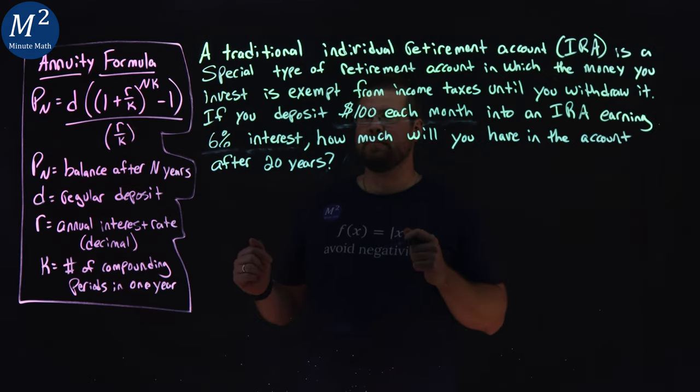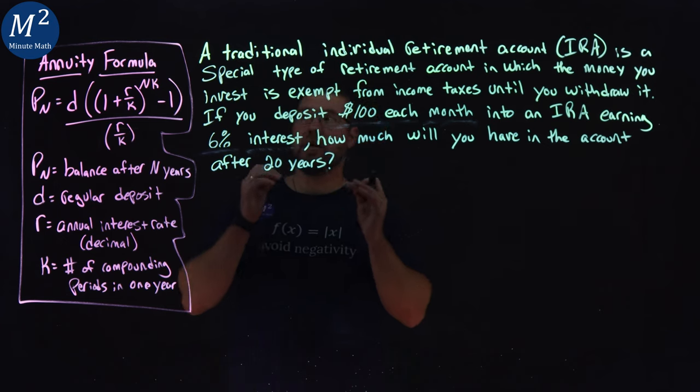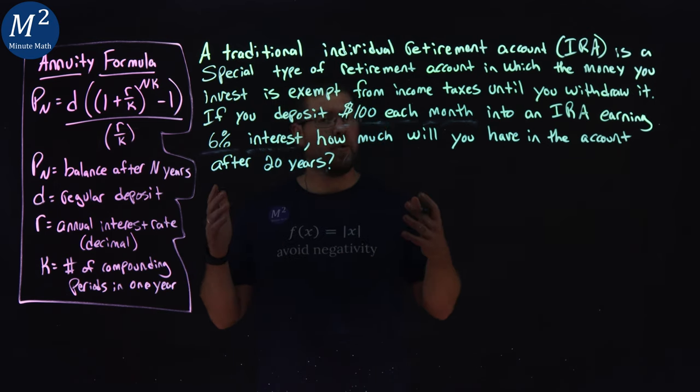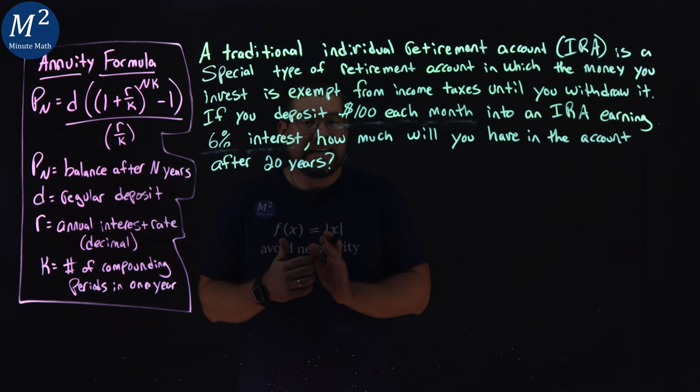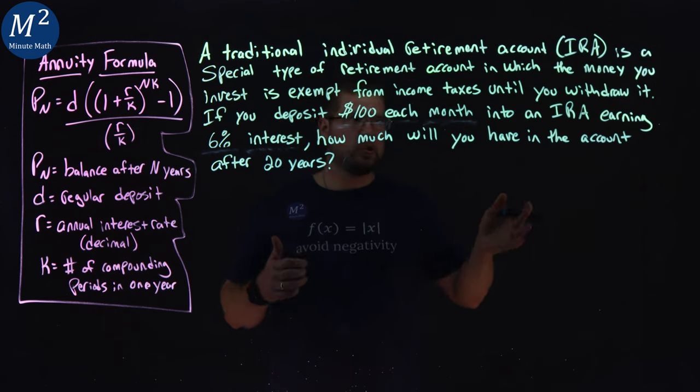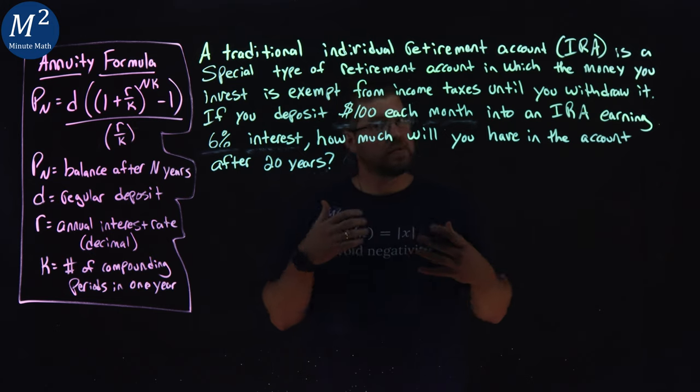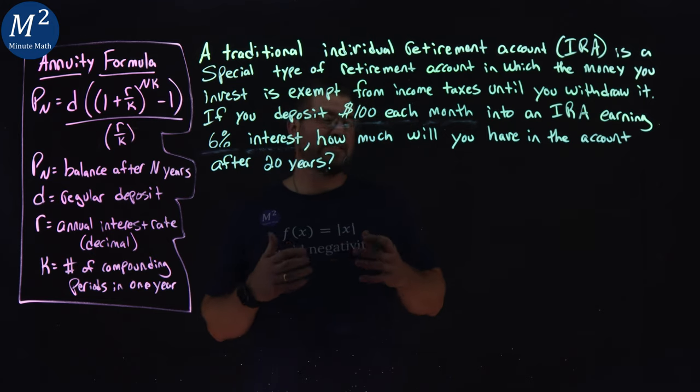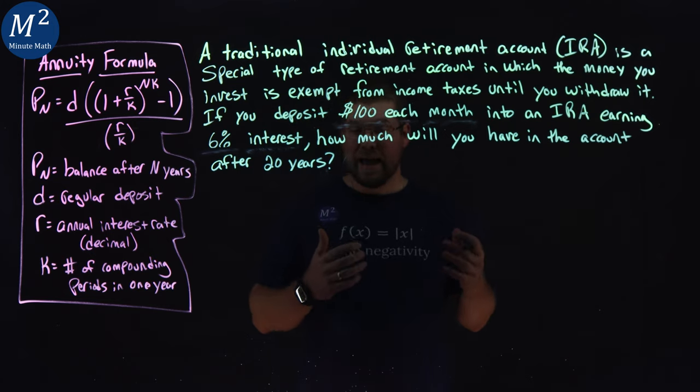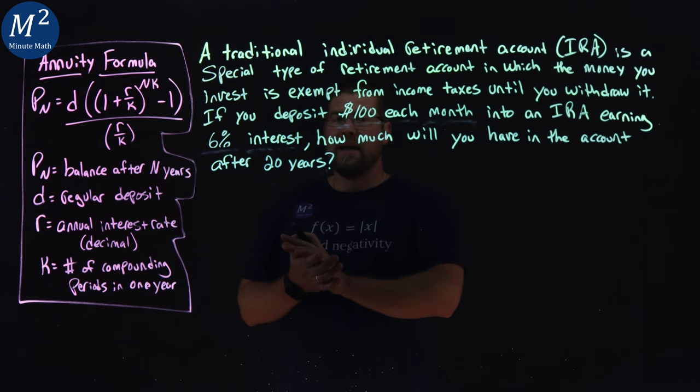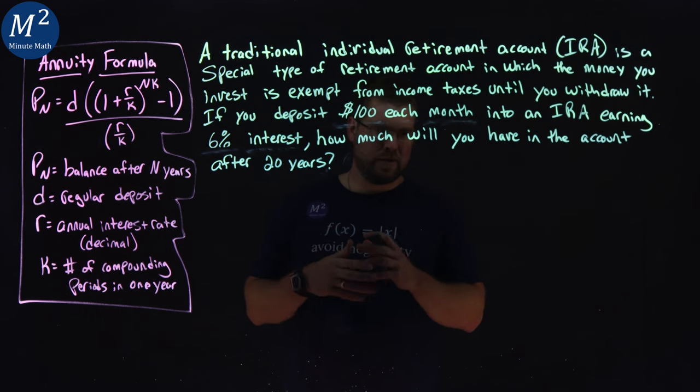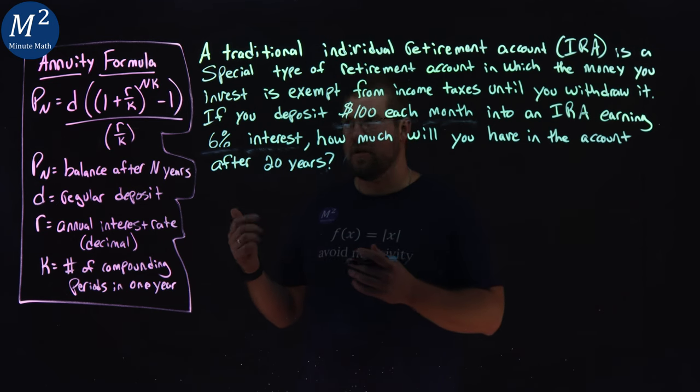Let's learn. This is an annuity formula. How do we know? Well, we're depositing every month into the account. Every month, we're putting $100 into this retirement account that's going to grow for 20 years, and we're not going to touch it until the end. In that case, it's compounding, but we keep adding money into this big old barrel that just gets larger and larger over the years.